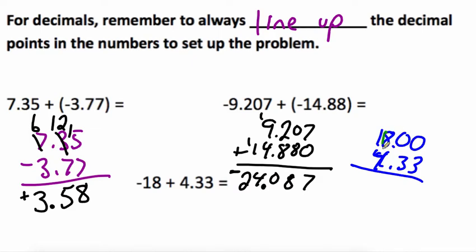Going to have to do a little borrowing here. Can't borrow from here so I gotta come all the way over here and make this into a 7 which makes this into a 10. Can borrow here makes it a 9 and this one makes it into a 10. 10 minus 3 is 7. 9 minus 3 is 6.